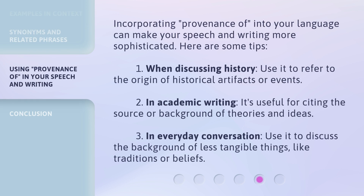Incorporating 'provenance of' into your language can make your speech and writing more sophisticated. Here are some tips: first, when discussing history, use it to refer to the origin of historical artifacts or events; second, in academic writing, it's useful for citing the source or background of theories and ideas; third, in everyday conversation, use it to discuss the background of less tangible things like traditions or beliefs.